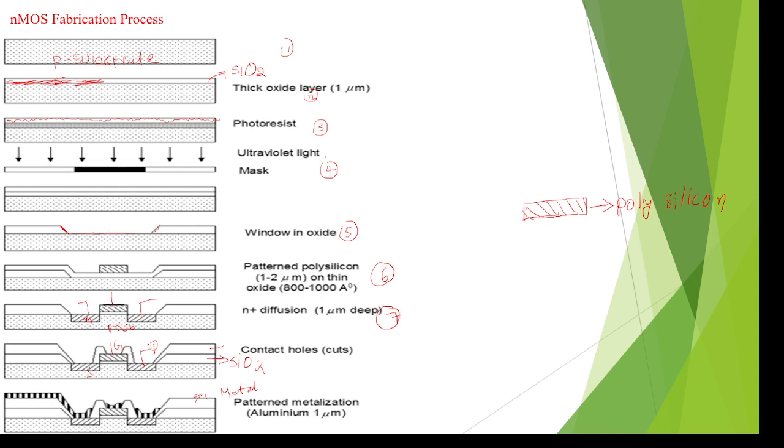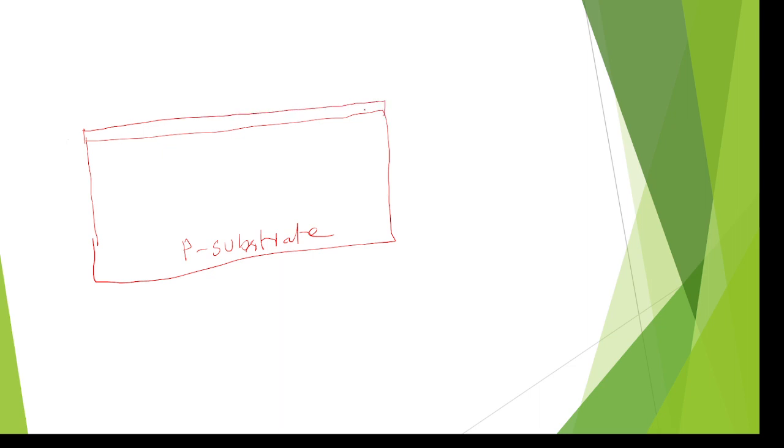These are the steps to design any transistor — either an nMOS or pMOS transistor. To summarize: first, take a p-substrate having holes from silicon material. In the second step, deposit the total surface with a silicon dioxide (SiO2) layer, which gives protection to the surface.